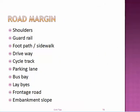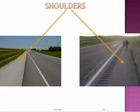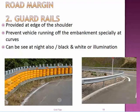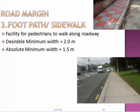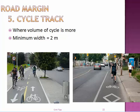The next cross-section element is road margins, which includes all the marginal features. The first is the pavement shoulder — provided on both sides of the pavement along the road surface, it provides structural stability and acts as an emergency lane, usually at a width of 2.5 meters. The second is guardrails, provided at the edge of the shoulder to prevent vehicles from running off the embankment. The third is the footpath, also called sidewalk — a facility for pedestrians to walk. The fourth is the driveway, connecting the highway with commercial establishments. The fifth is the cycle track, used exclusively by cyclists.